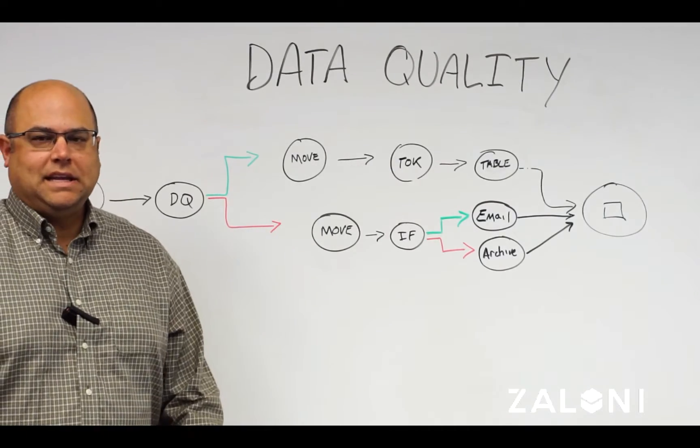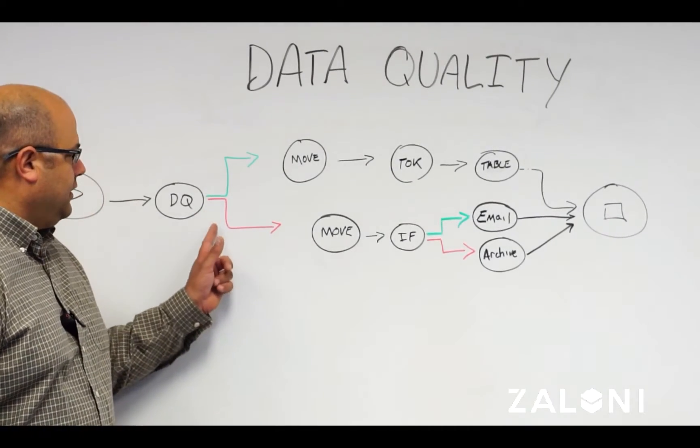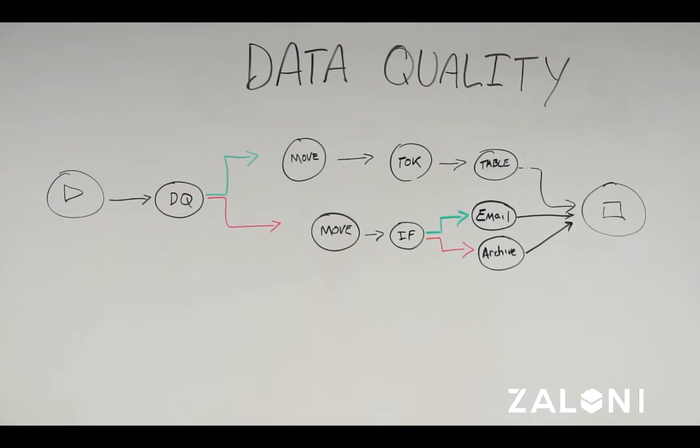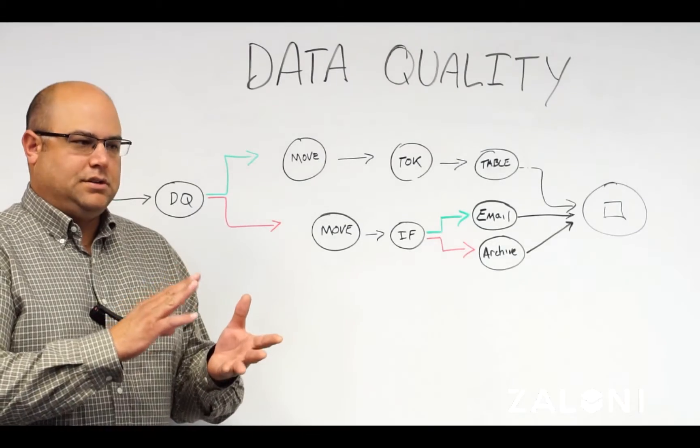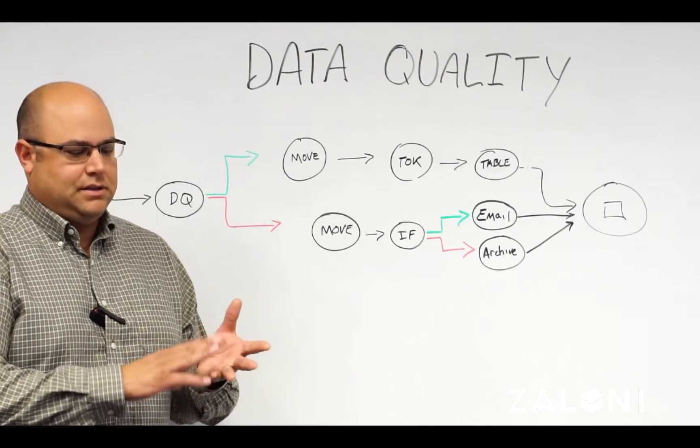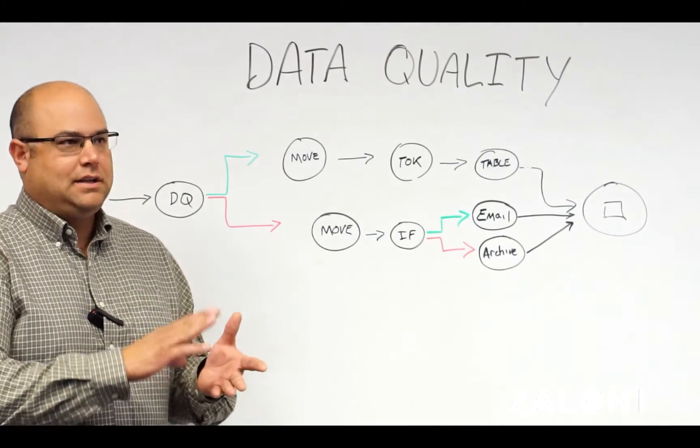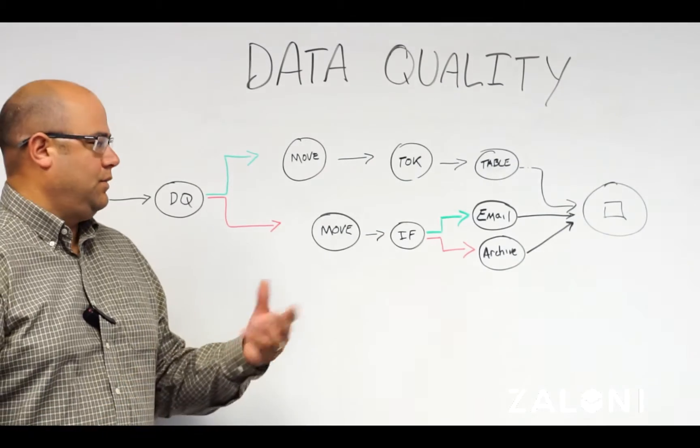From a bad data perspective, we're going to follow the red path. And this is where you can also do some decisioning on what to do with data that you might classically reject. Do you keep it for long-term storage? Do you attempt to fix it? Do you attempt to archive it? Do you notify someone about what happened?